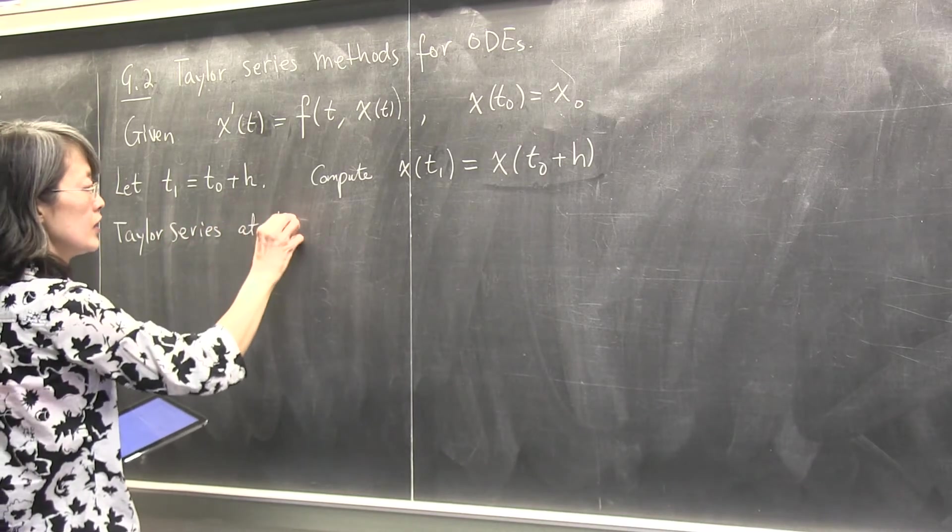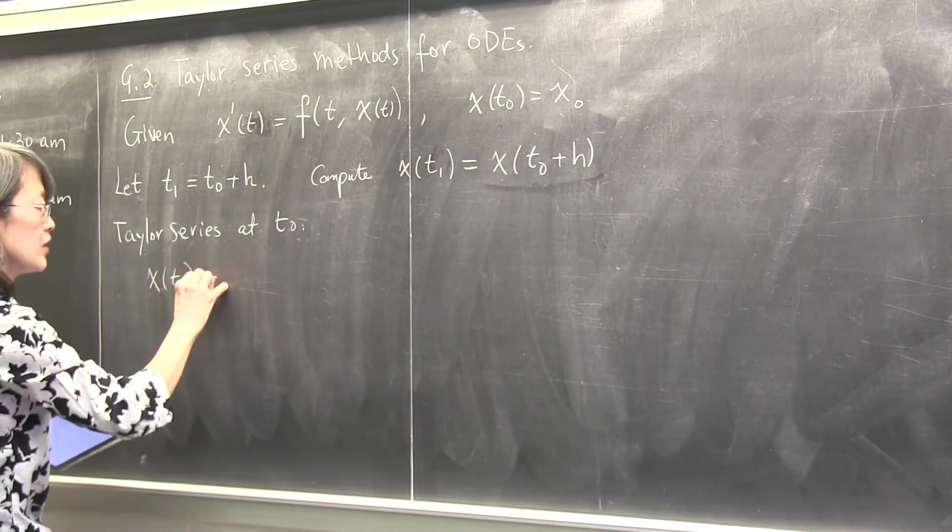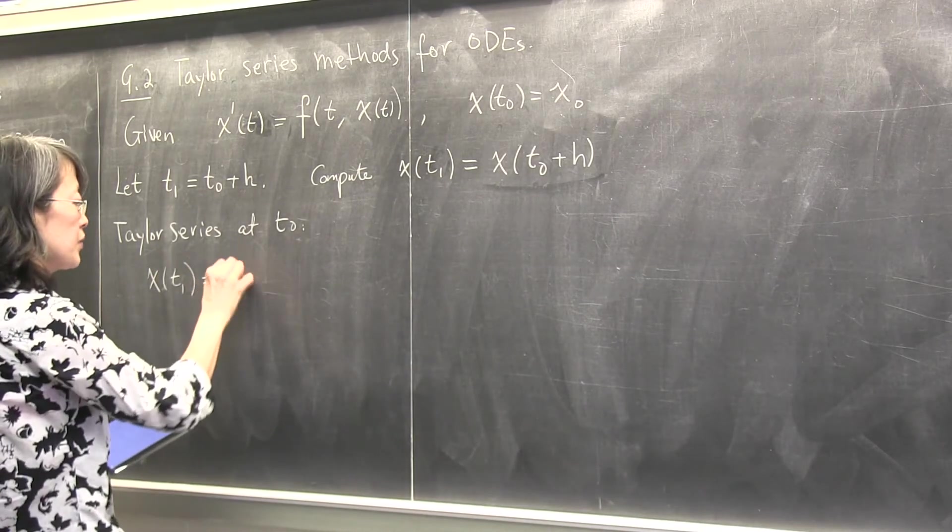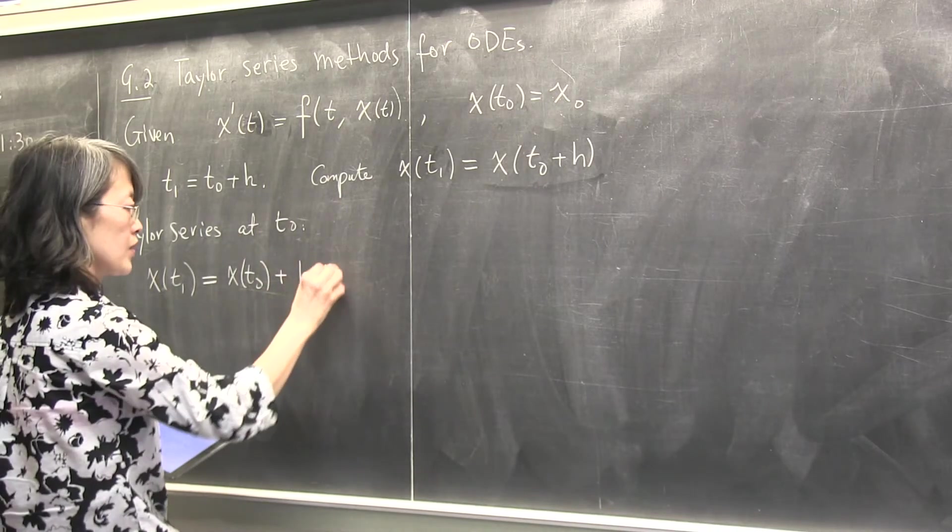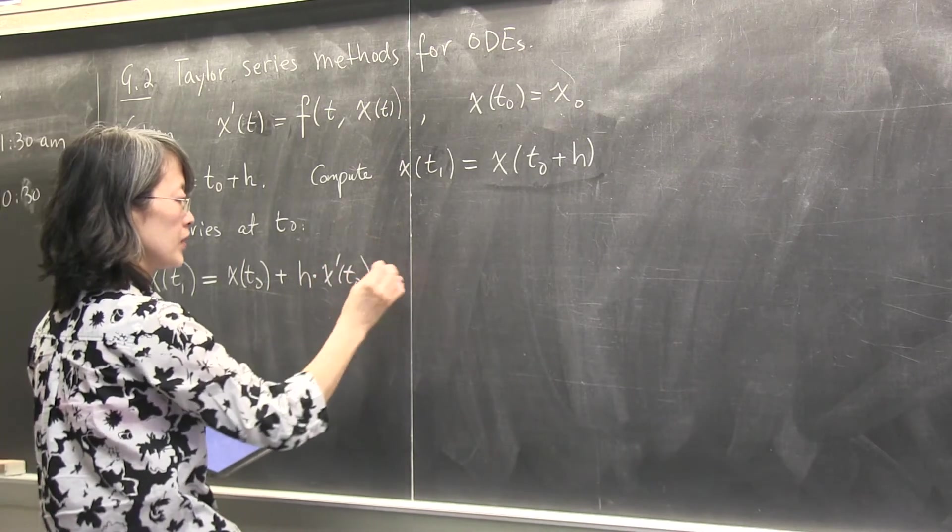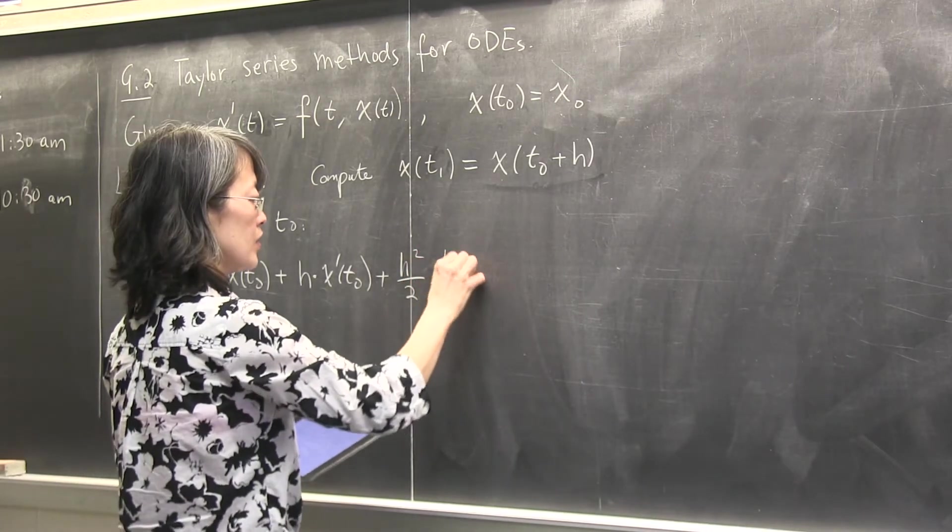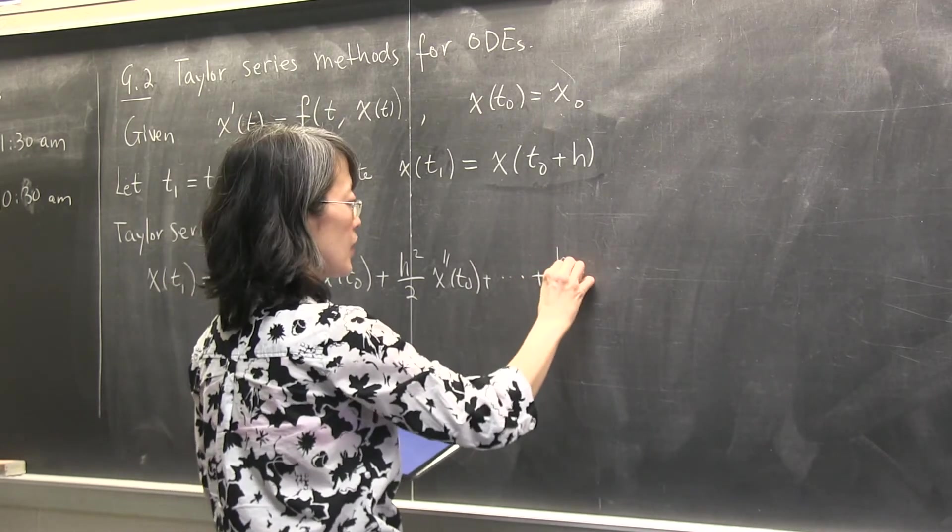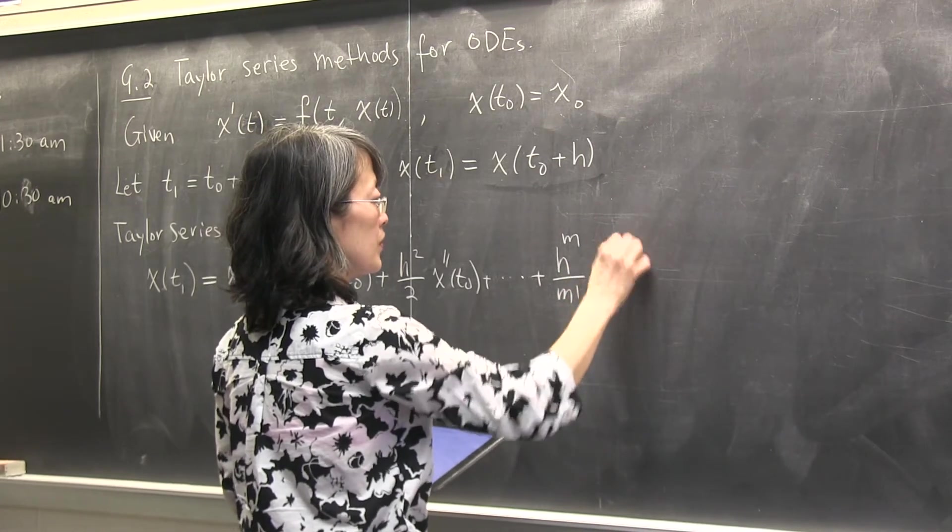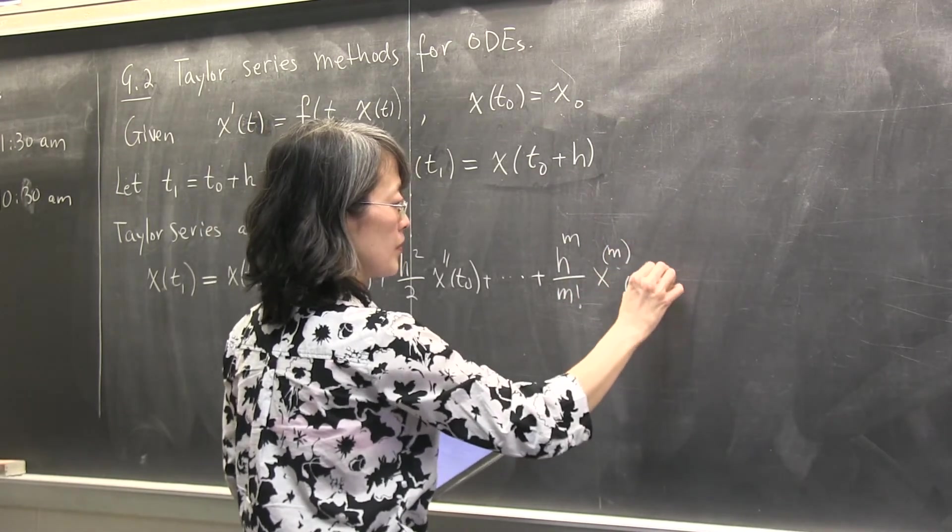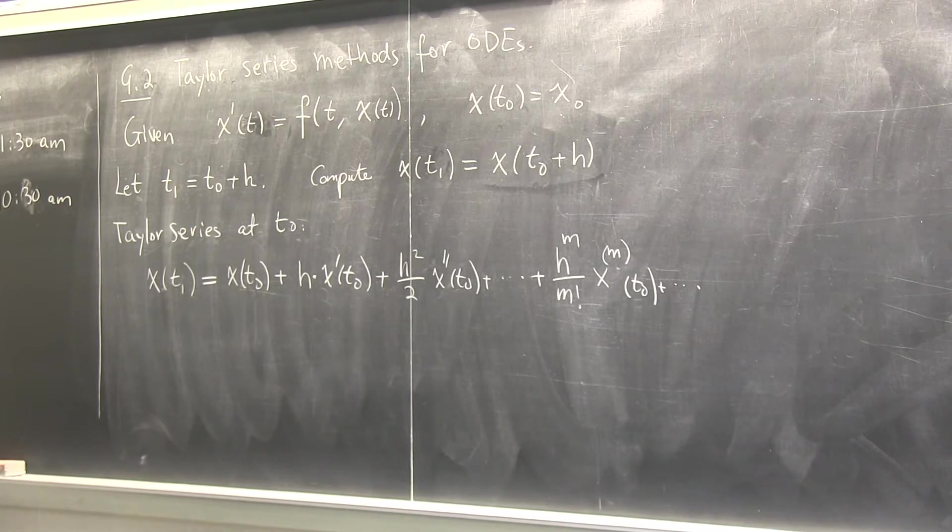Or some approximation of it. So this will be x at t0 plus h. So what I'm going to do now is thinking x as a function of t, I'm going to expand this here. It's Taylor series. Expand it at t0. Using every information at t0 to predict the value at t0 plus h. Taylor series.